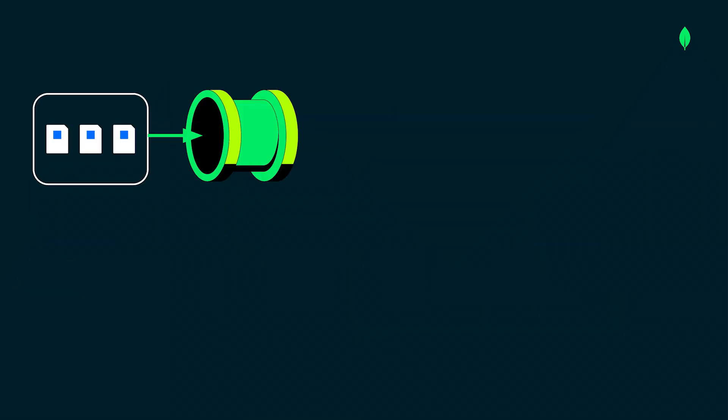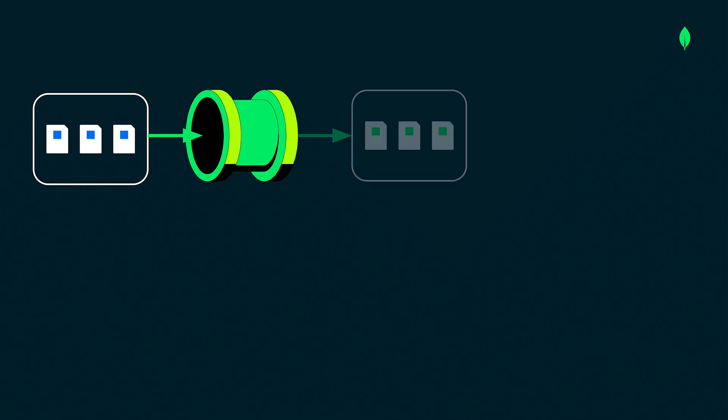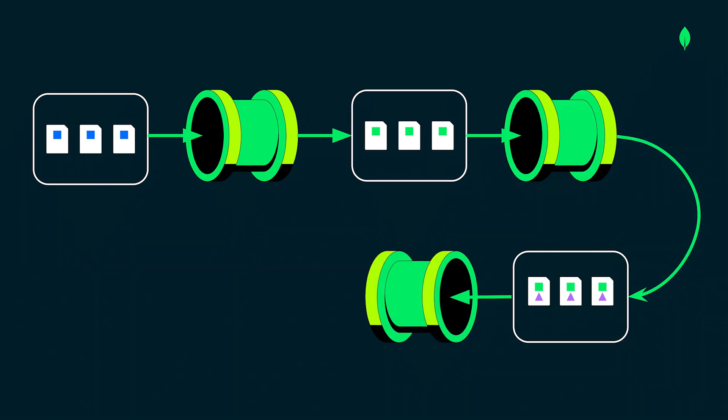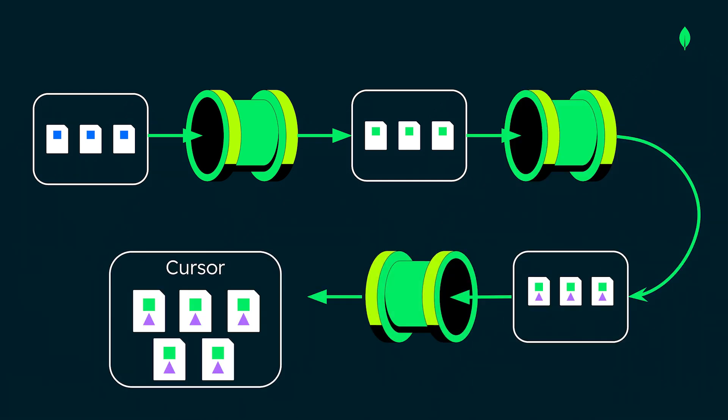Each stage performs an operation on the input documents, such as calculating values or traversing an array. The documents that are output from a stage are passed on to the next stage. This continues until the end of the pipeline where the final output is delivered.